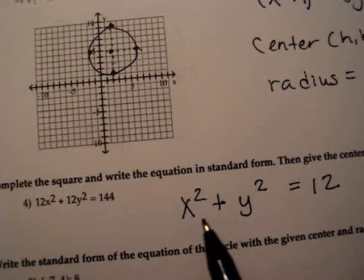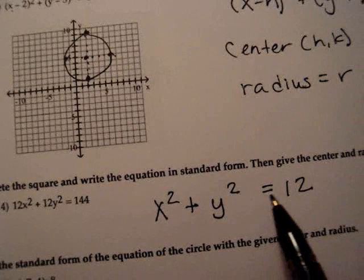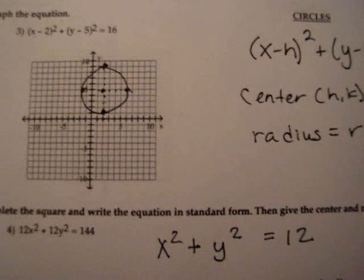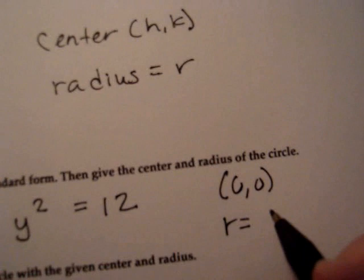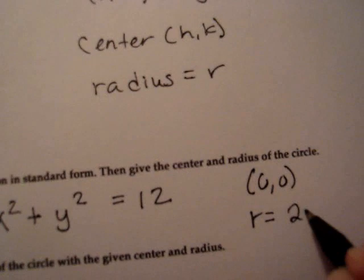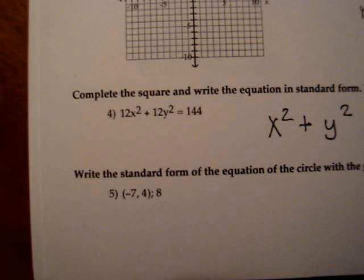You will get x squared plus y squared is equal to 144 divided by 12 is 12. So on this circle, if we were to graph it, the center would be at 0, 0, because there are no h and k here. And the radius would be, careful, the square root of 12. So we're going to have a center at 0, 0 and a radius. Now you have to simplify your square root. I'll let you guys think about that. The square root of 12 would simplify into 2 root 3. Done.